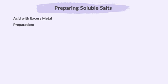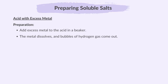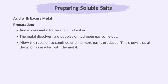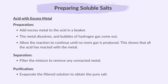To make a soluble salt using the other three methods, the steps are basically the same. This method involves reacting an acid with an excess of a reactive metal. Add a lot of metal to the acid in a beaker. The metal dissolves and bubbles of hydrogen gas come out. Allow the reaction to continue until no more gas is produced — this shows that all the acid has reacted with the metal. Evaporate the filtered solution to obtain the pure salt. This method ensures that all the acid reacts with the metal, making a salt and releasing hydrogen gas.